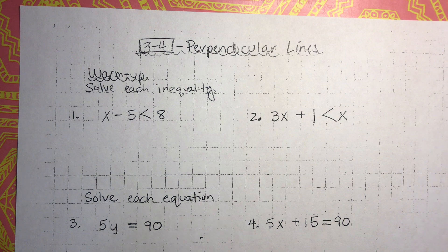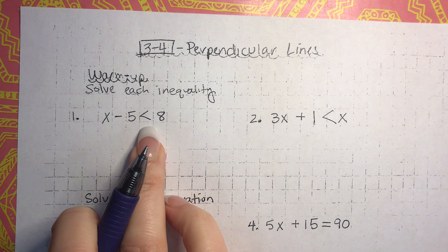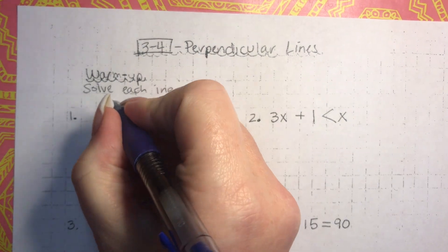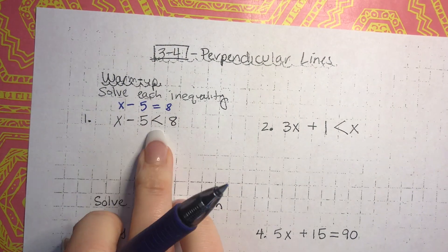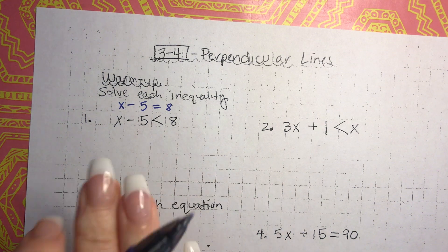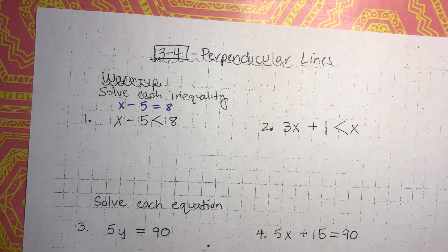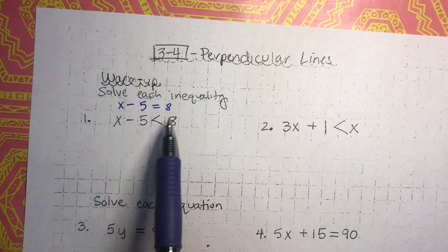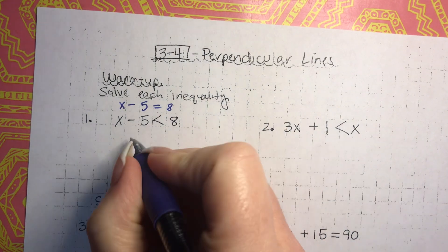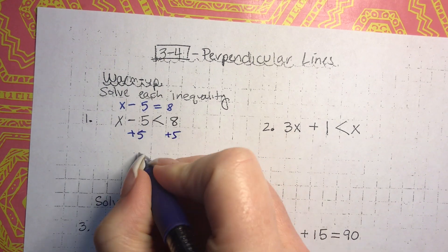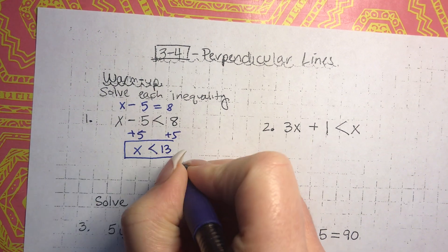Alright, we're back. Let's see how you did. So the first thing I'm going to try to do is get x by itself with this inequality. Remember this inequality — you just kind of do the same things as if this was an equation. So here, we're going to add 5 to both sides, which means we end up with x is less than 13. So if you got that one right, awesome job.